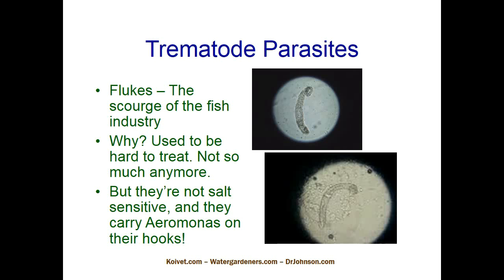Praziquantel is available in bottles. Hikari has one called PraziPro. Generally with this particular compound you're going to see 'prazi' in the name — P-R-A-Z-I. Praziquantel is also available from your veterinarian in Droncit tablets — that's pure praziquantel. The problem is praziquantel in the Droncit or veterinary form is outrageously expensive. I did the math one time and it would have cost $300 to treat a 10-gallon tank. But now importers are bringing it in in 55-gallon drums, which has brought the price down considerably.